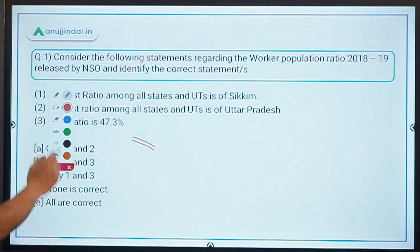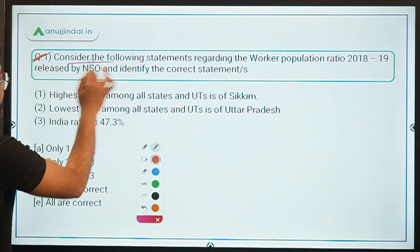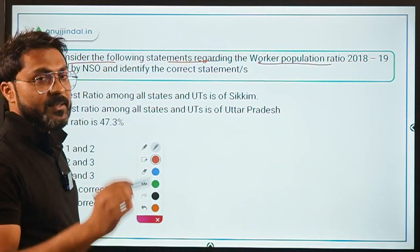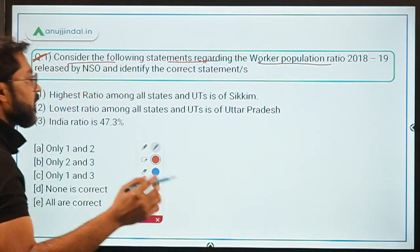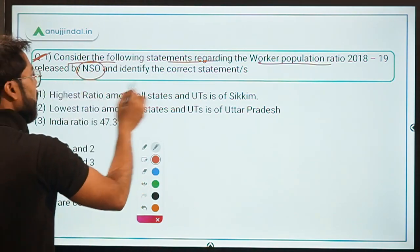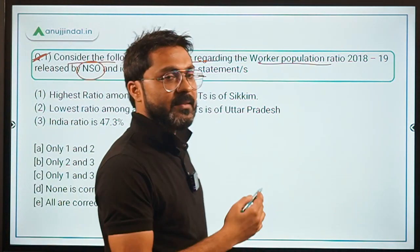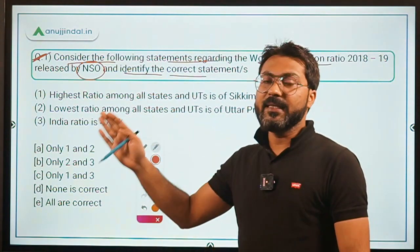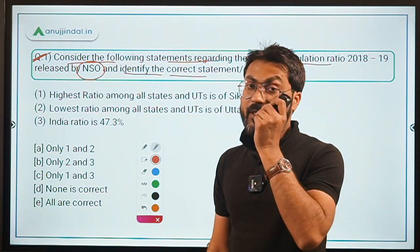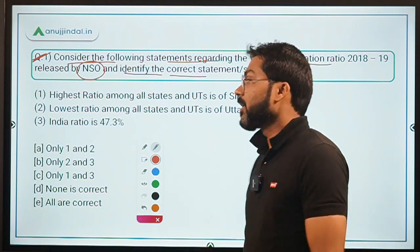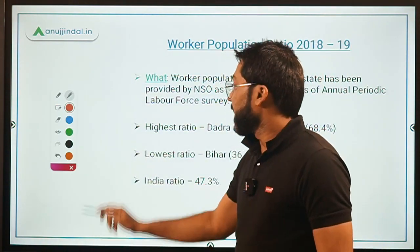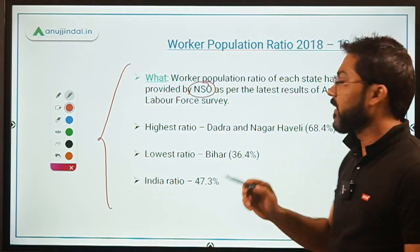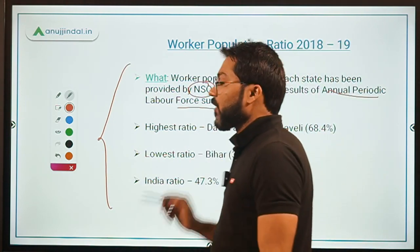Let's begin with the very first question. Consider the following statements regarding the worker population ratio for the year 2018-19, recently released by NSO, and identify the correct statement. NSO has released the 2018-19 worker population ratio data as per the Annual Periodic Labour Force Survey.